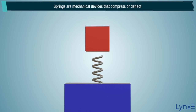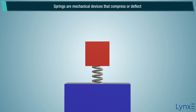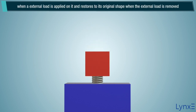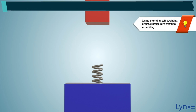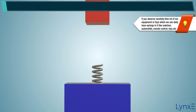Springs are mechanical devices that compress or deflect when an external load is applied, and restore to their original shape when the external load is removed. Springs are used for pulling, winding, pushing, supporting, and sometimes for lifting. A lot of our equipment and toys which we use daily have springs in them, like watches, automobiles, remote controls, toys, etc.